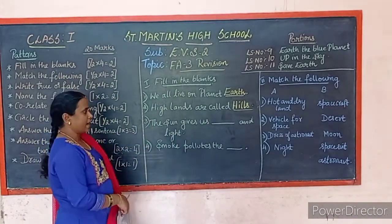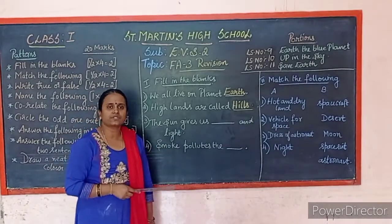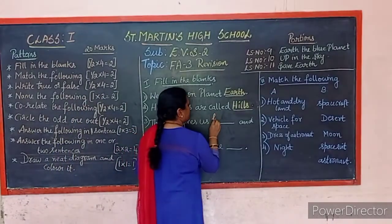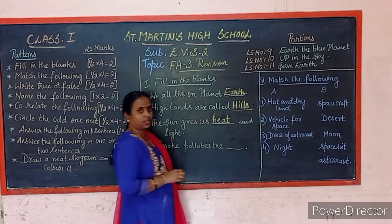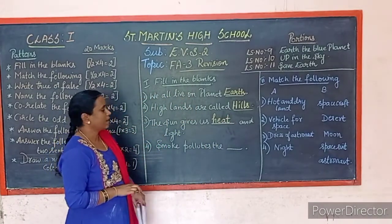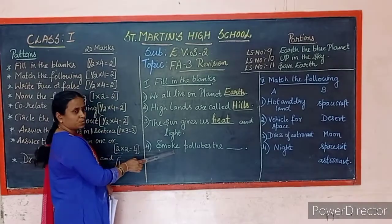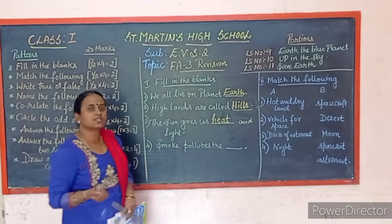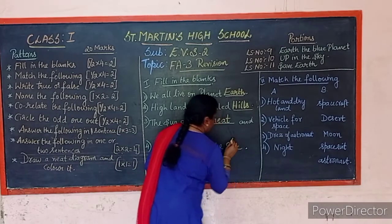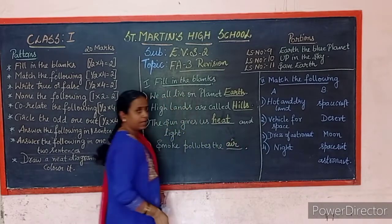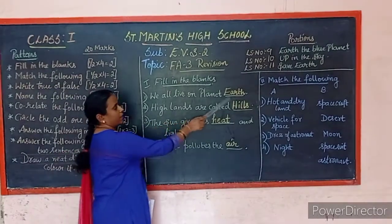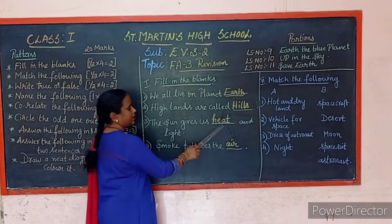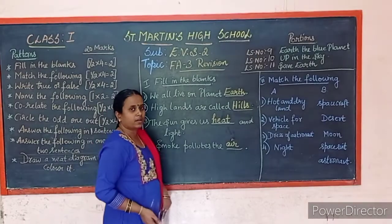'The sun gives us ___ and light.' The answer is heat. 'Smoke pollutes the ___.' The answer is air. So the four fill-in-the-blank answers are: Earth, hills, heat, air.